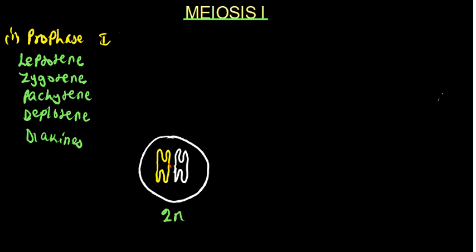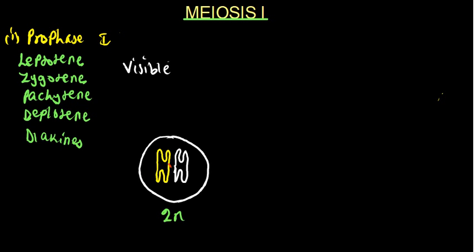After condensation and coiling in leptotene, the chromosome is now visible. When the cell enters meiosis, chromosomes are invisible; they only become visible when they condense and coil. At this stage the chromosome has coiled so it is now visible. We are representing just one pair here, but think of those 23 pairs from the mother and father — we have 23 chromosomes from the mother and 23 from the father.